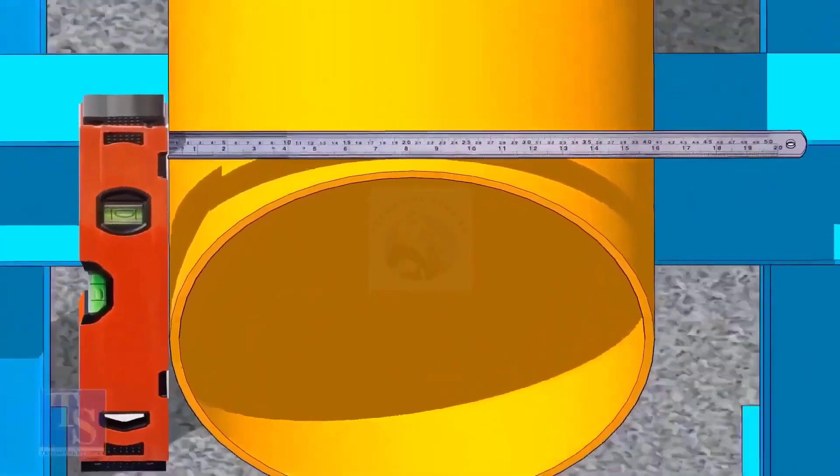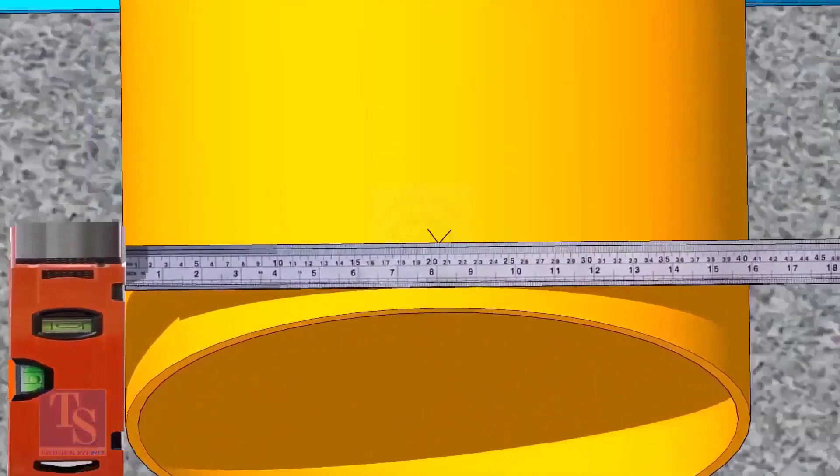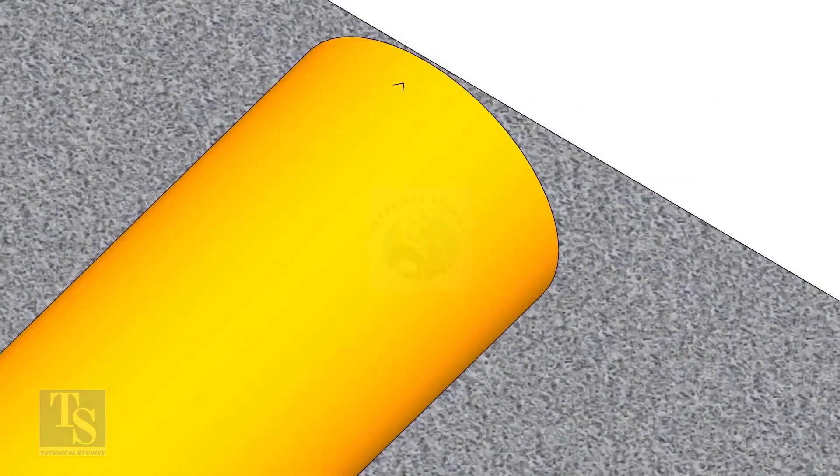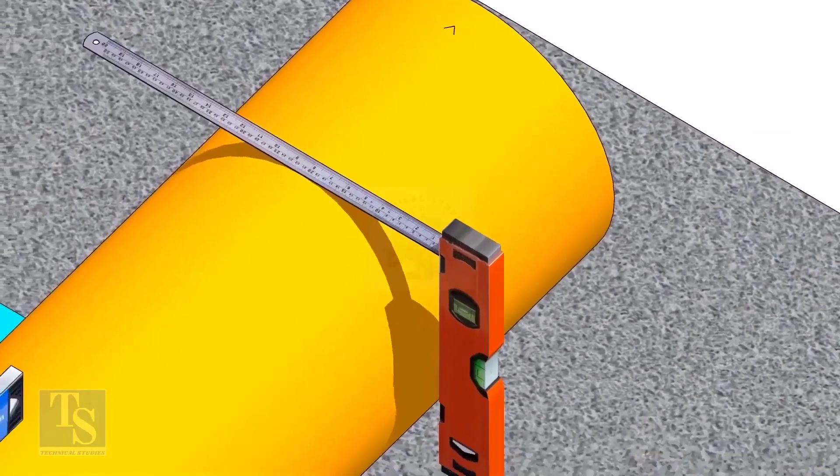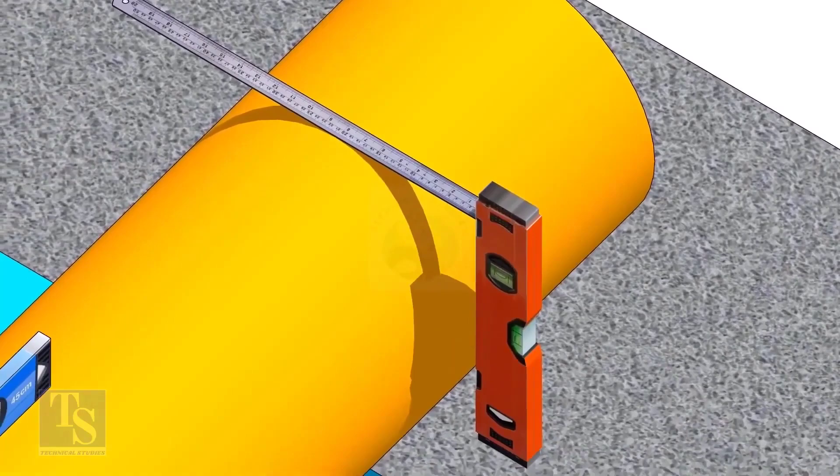Mark half OD at 300mm apart. This pipe OD is 406mm, so mark 203mm from the vertical level bottle, on the top of the pipe. And draw a line connecting these marks.